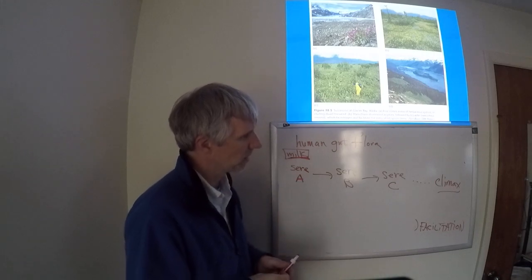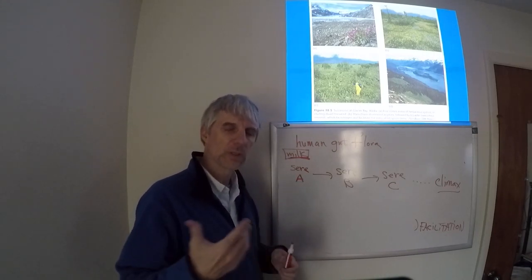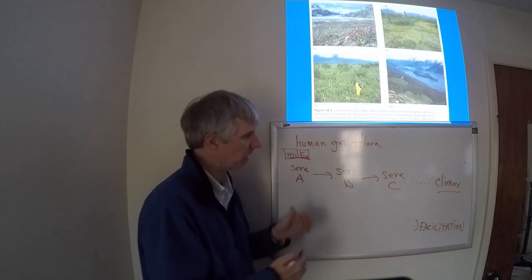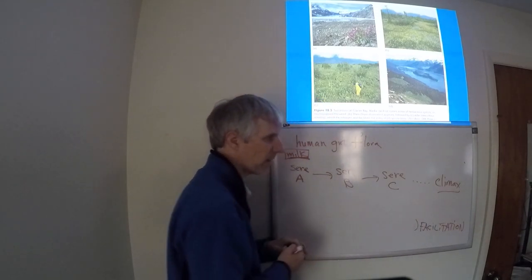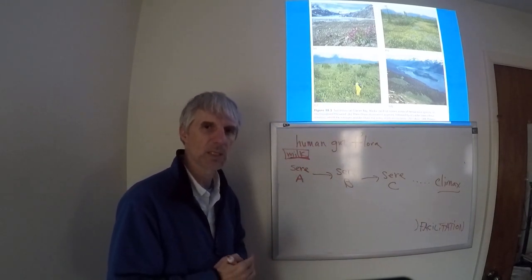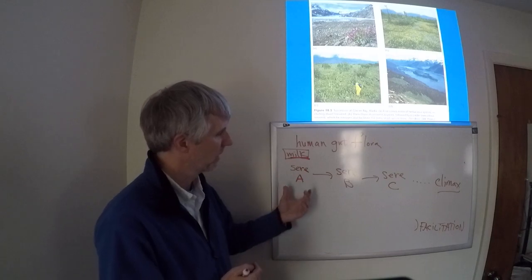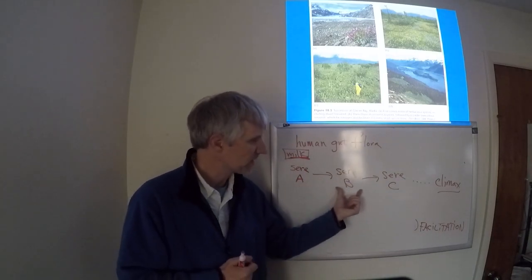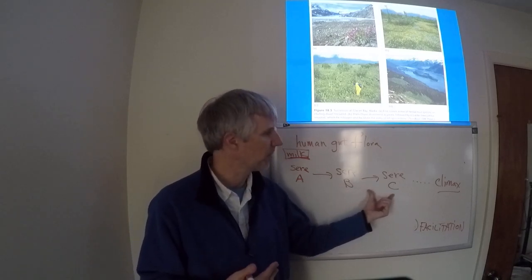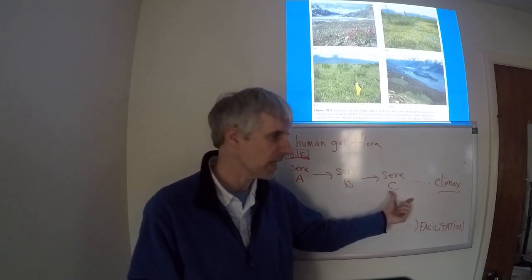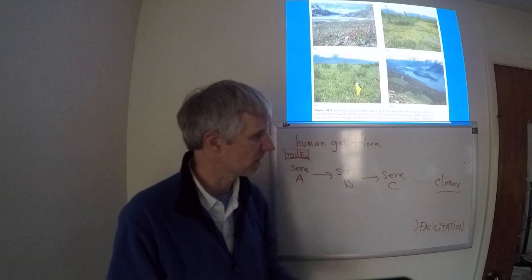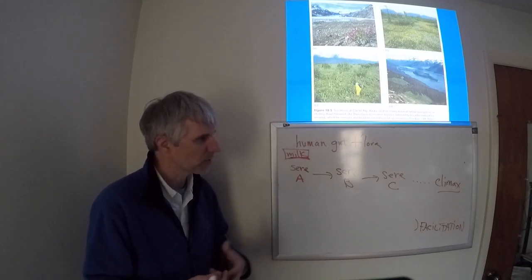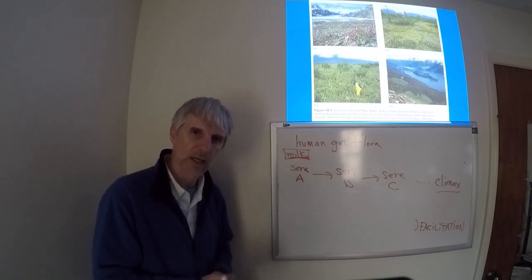This successional model for gut flora would take a while to develop. It's not like you instantaneously develop that final group of species that would be in our guts. That this process would take weeks to get to sere B and maybe months to get to sere C and maybe a couple of years to get to this climax community once we have this kind of adult diet kind of worked out.